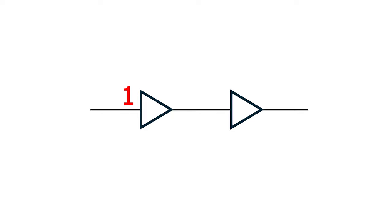When the input to the left buffer is on, its output will be on. This feeds to the input of the second buffer on the right and its output will be on also. When the input to the left buffer is off, its output will be off and the output of the right buffer will be off as well.